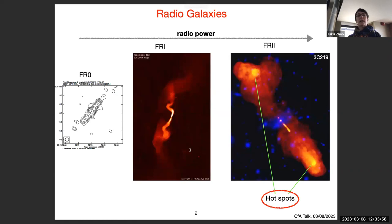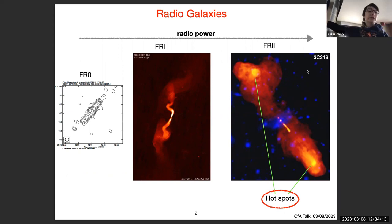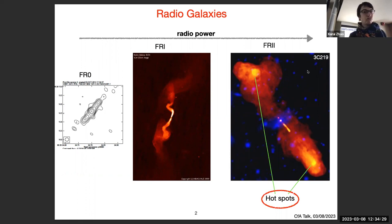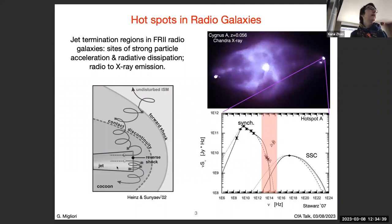Radio galaxies can be classified based on their radio power and morphologies. Today we are going to focus on the most powerful ones, the Fanaroff-Riley type 2, which are characterized by collimated jets ending with characteristic bright radio hotspots. Hotspots can be considered as the working surface of the jets — they are the sites where particle acceleration is taking place.